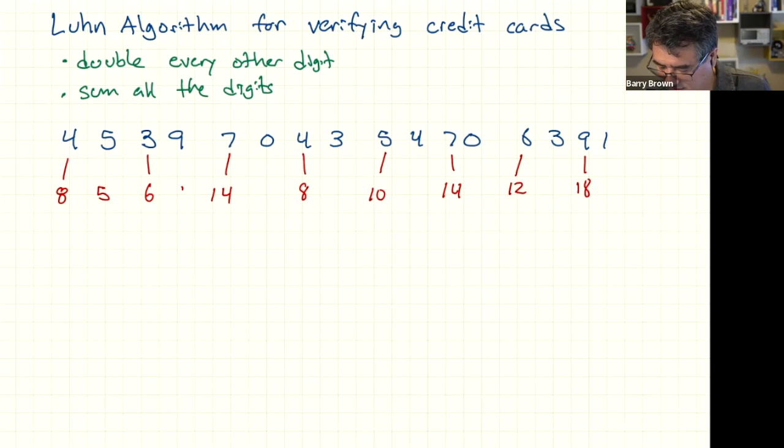And then you've got the other numbers. 5, 9, 0, 3, 4, 0, 3, and 1. And now what you're going to do is you're going to sum up all the digits. And this is where you have to be really careful because you're not summing up the numbers. You're summing up the digits.